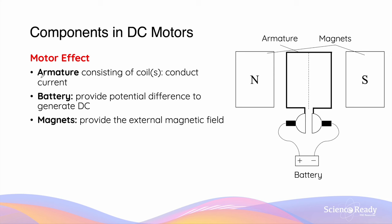We need the armature, which could consist of a single turn or multiple turns of coil, to conduct the current. We also need a DC power supply — usually a battery — which provides sufficient voltage to generate the direct current.